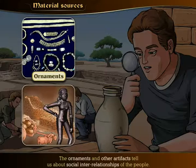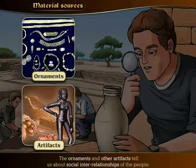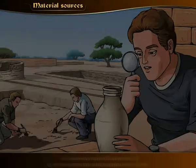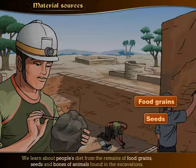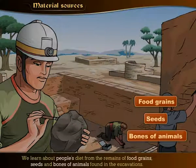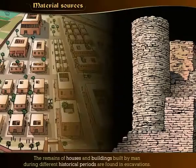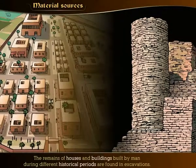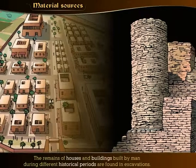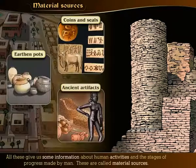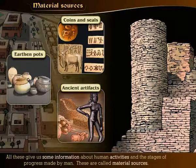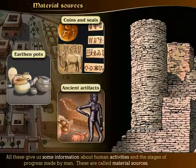The ornaments and other artifacts tell us more about the social interrelationships of the people. We learn about people's diet from the remains of food grains, seeds and bones of animals found in the excavations. The remains of houses and buildings built by man during different historical periods are also found in excavations. Coins and seals are also found. All these give us some information about human activities and the stages of progress made by man. These are called material sources.